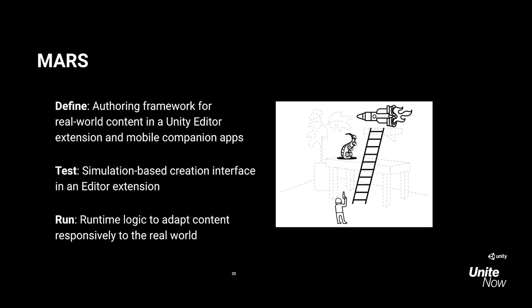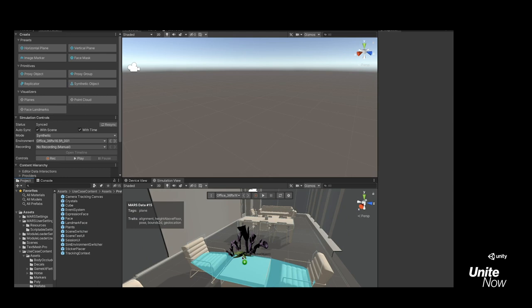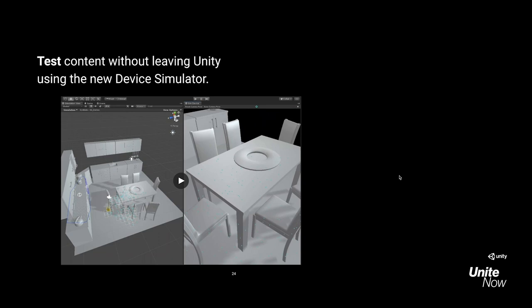The first thing we do is give you new ways to define how content should work through an authoring framework — a Unity Editor extension. We'll also have a mobile companion app. We're going to make your testing and QA life a lot easier by providing a simulation-based creation interface in an editor extension. You don't even have to think hard about your runtime logic — we have build once, deploy anywhere. We'll let you run your content through a logic engine that handles different devices and different sensing capabilities in the background. We're showing a few gizmos in the UI that let you edit your content, and you can do drag-and-drop directly into this simulation view.